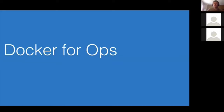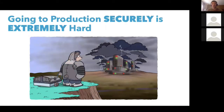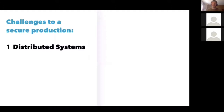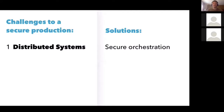Let's talk about Docker for apps. What we talked about at DockerCon was that the need for apps is to go to production, and going to production is hard. But going to production securely is extremely hard. The challenges of production systems are that they are distributed systems — people can think distributed systems are just small systems and you can use the same tools, but the real solution is to use secure orchestration.